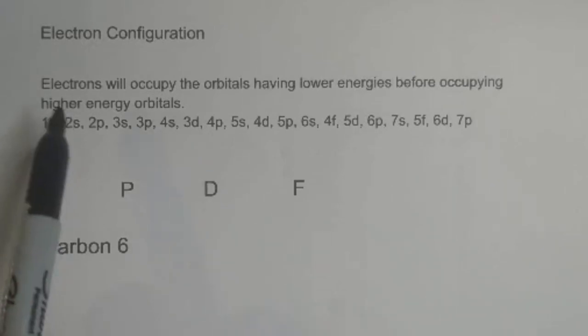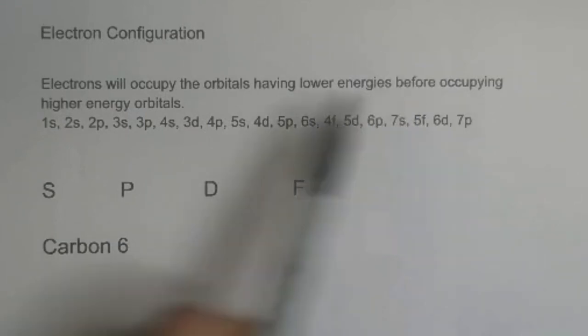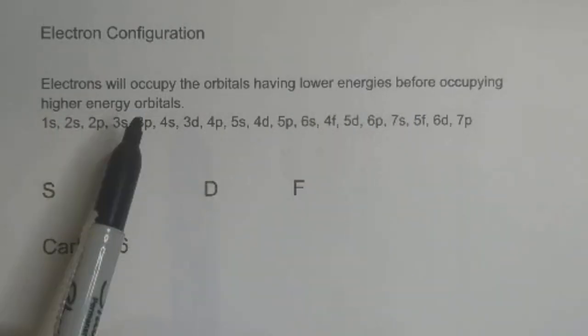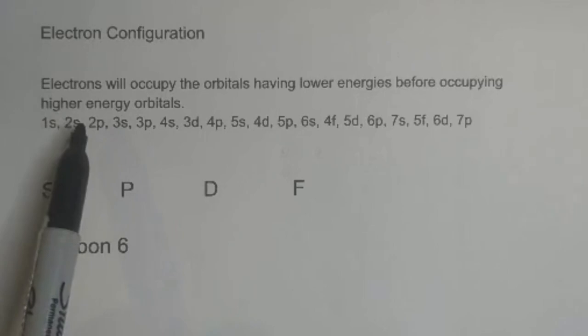First rule of thumb: electrons will occupy the orbitals having lower energies before occupying higher energy orbitals. They occupy the orbitals like this: 1s, 2s, 2p, 3s, etc.